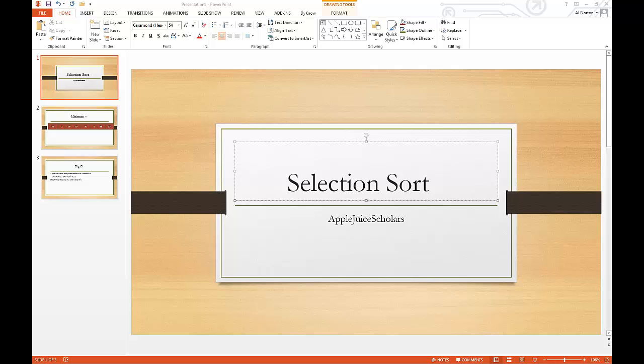The selection sort is a quadratic sorting algorithm that has a big O of N squared, which I will be talking about at the end of this video, but for now I'm going to talk about the algorithm and how it works and show you an example.